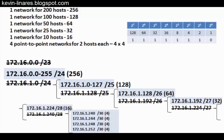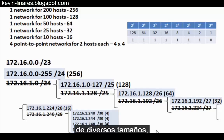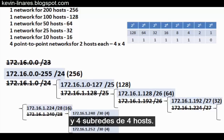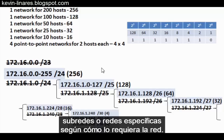In the end, we've created nine subnets of different sizes: a 256, a 128, a 64, a 32, a 16, and four host subnets. This is VLSM — variable length subnet masking — and it allows us to create subnets or networks specific to the needs of the network.